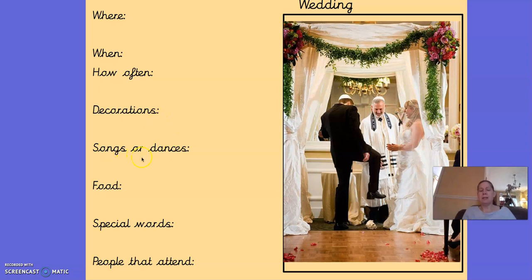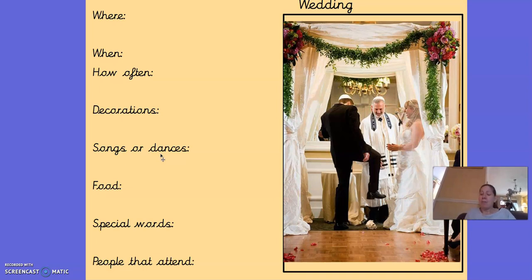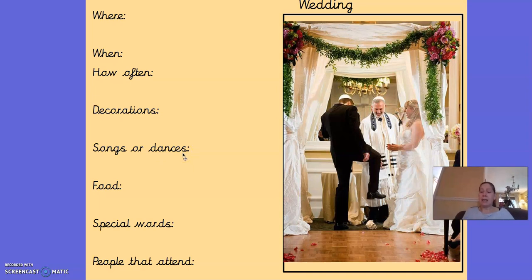Songs or dances — what normally happens at a wedding is the couple getting married, who are called the bride and groom, have a special song that means something to them. After they've got married and they have something called the reception — which is like the party afterwards — they will play this song, and it's called the first dance. The bride and groom dance to that song before everybody else goes on the dance floor. If you get married in a church, you can also have some hymns — songs you have chosen that you'd like everybody to sing at your wedding.